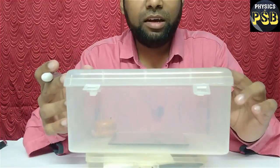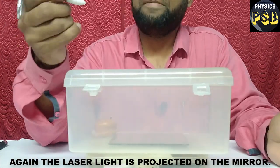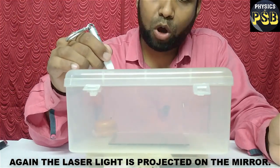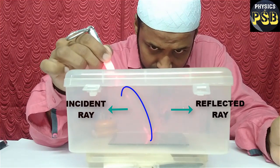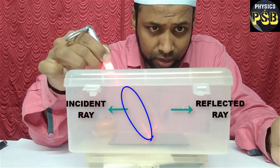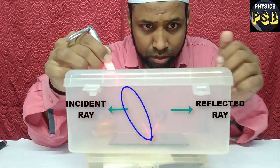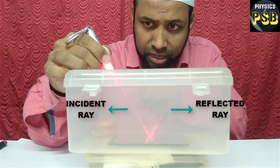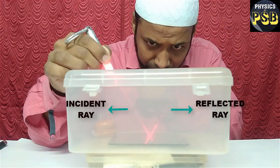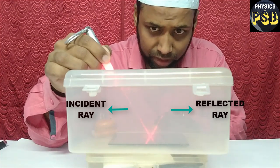Now, the box is almost filled with fumes. Now, I project light from the laser toy. You can see. Now, I hope the path of light is visible. Here, the light comes from the laser toy and hits the mirror.